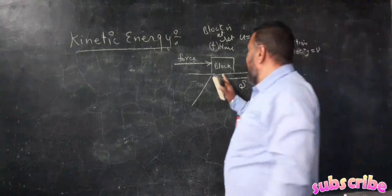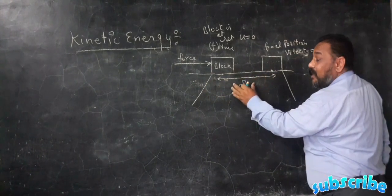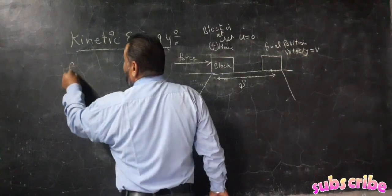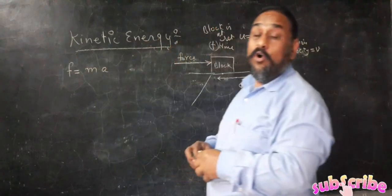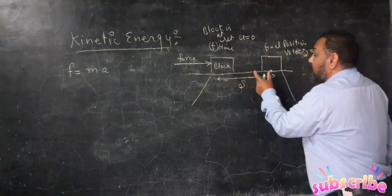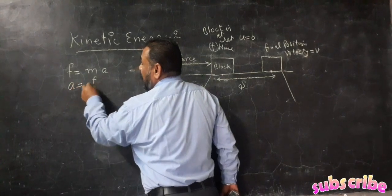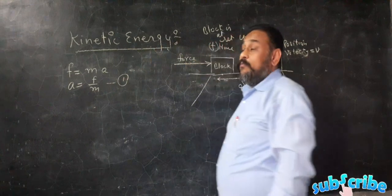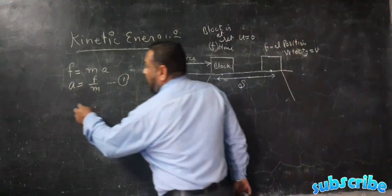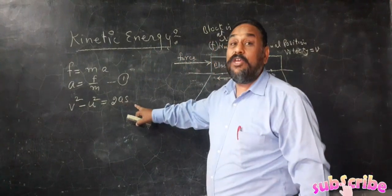When we apply a force, the block accelerates and gains displacement. We know F = MA — force is equal to mass times acceleration — because when we apply a force on the block, the block produces acceleration. From this, acceleration a = F/M. Now, we will use the equation of motion: v² − u² = 2as.